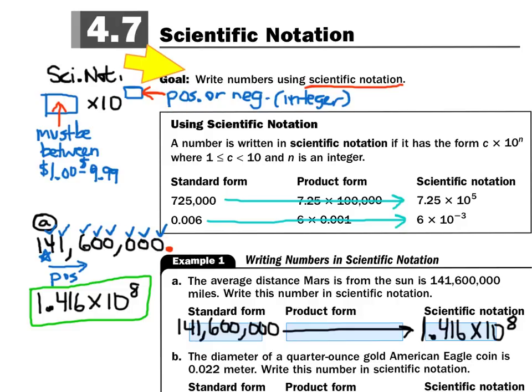Let's do an example together. If I wanted to write 725,000 — that's standard form, the normal way you'd see a number — in scientific notation it would be 7.25 times 10 to the 5th power. And if I had a small decimal fraction like 6 thousandths, 0.006, I could write it in scientific notation as 6 times 10 to the negative 3rd power.